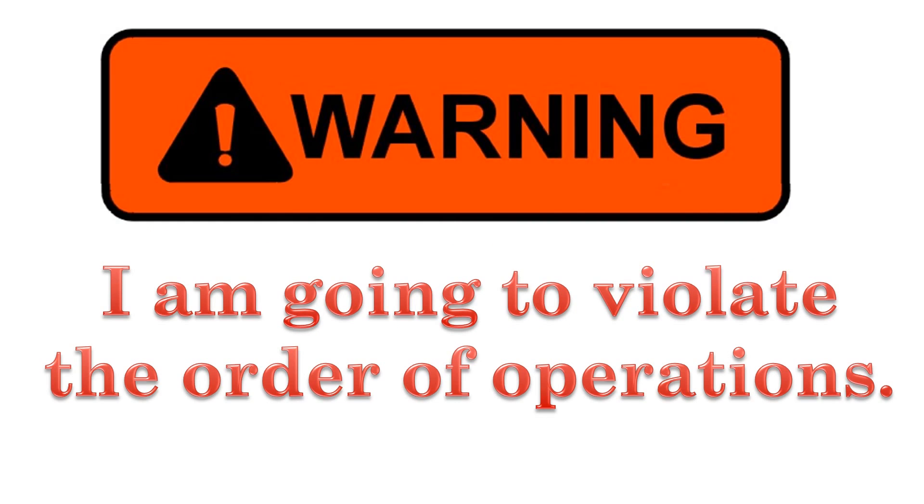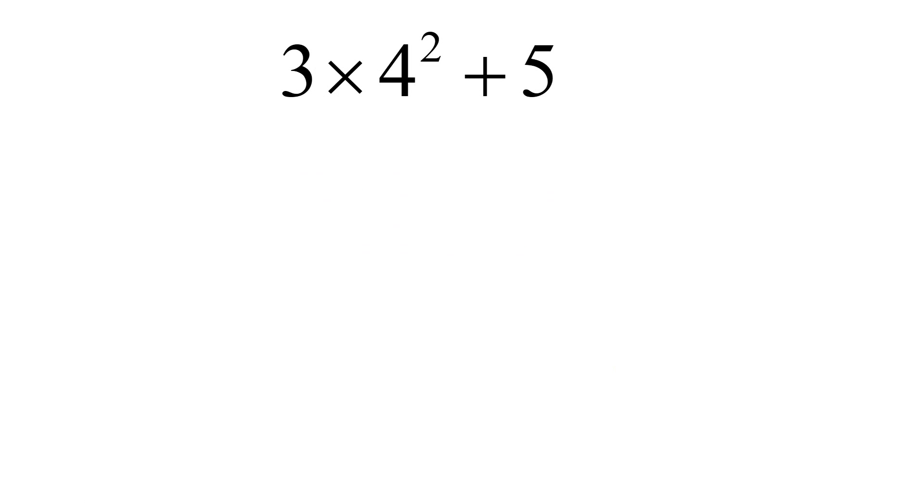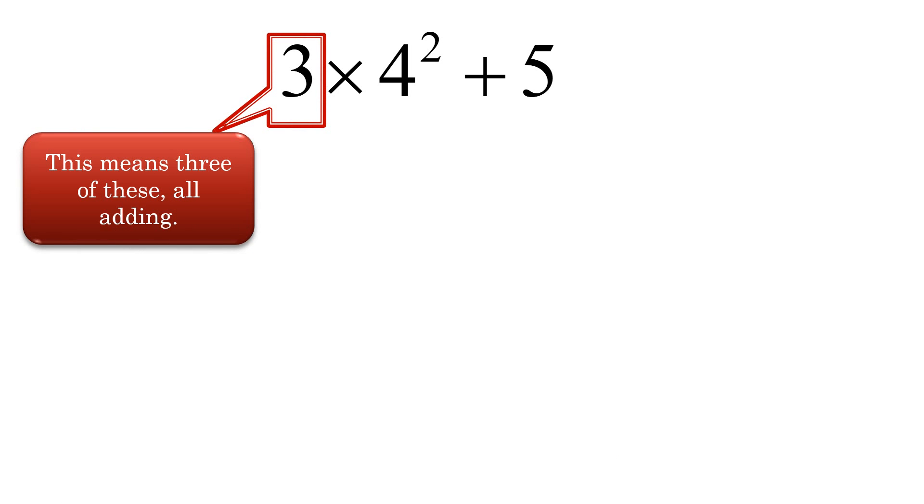So, I'm about to break the law. I am going to do a problem in violation of the order of operations and it's going to be right. But I am going to do the problem with respect to what the operations themselves really mean. Because what we're going to see is that the order of operations, well, they kind of make it so you don't have to think about what those operations mean. They structure it for you in a way. So, here, let me show you. I'm going to do this problem just straight up left to right. So, I've got 3 times 4 squared plus 5. Order of operations says that I should do the exponent first, then multiply them in. But, I'm going to multiply first.